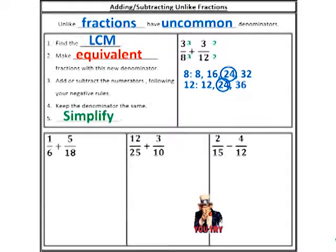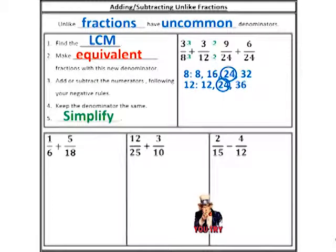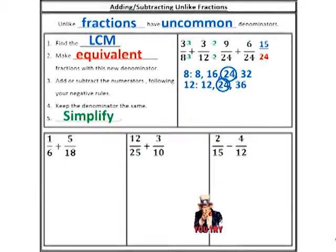It's a nice easy shortcut, and it's derived from what we know of multiplication. So I rewrite the whole problem — don't just scribble over the fractions that are there, rewrite the whole problem. Three times three is nine. Eight times three is twenty-four. Three times two is six. Twelve times two is twenty-four. There's my new set of fractions. If I did everything correctly, I should have common denominators, making these two like fractions. Add your numerators: nine plus six is fifteen. My denominator stays the same — it's twenty-four.